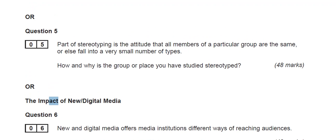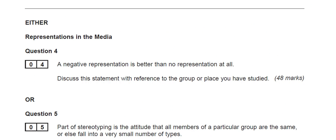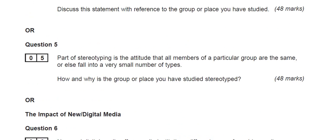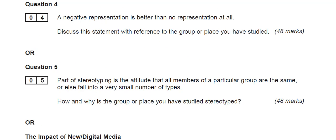If we have a look at a couple of the questions: Question four — 'A negative representation is better than no representation at all. Discuss this statement with reference to the group or place that you've studied.' Question five — 'Part of stereotyping is the attitude that all members of a particular group are the same or else fall into a very small number of types. How and why is the group or place you've studied stereotyped?' It seems like there's a pattern: you've got a statement and then you're asked to discuss your view alongside it. 'Discuss' is quite wide — you could take that in any direction. This one is more specific: how and why.